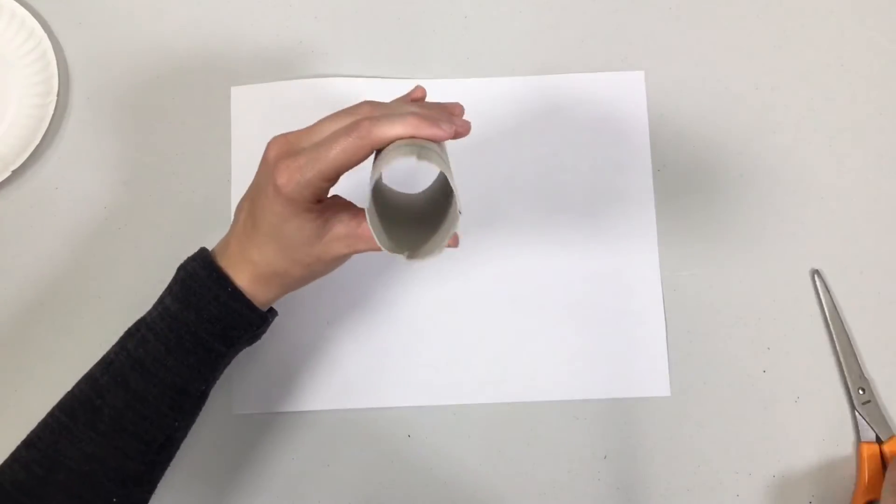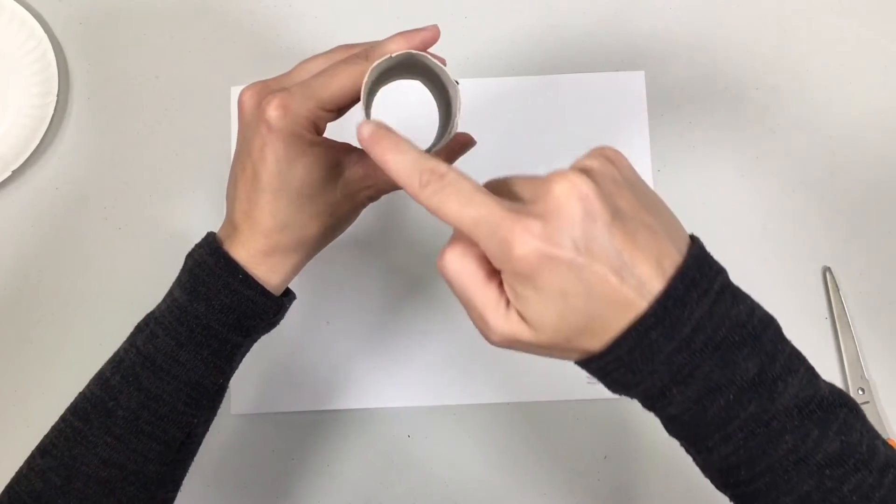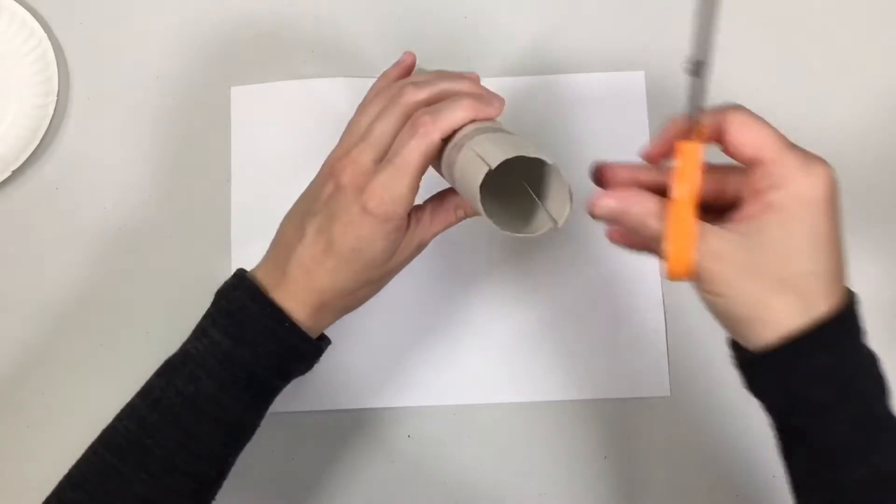So now what we've got is four pieces, and now in each one of these four pieces we're going to do two cuts. All right, so we'll do that now.